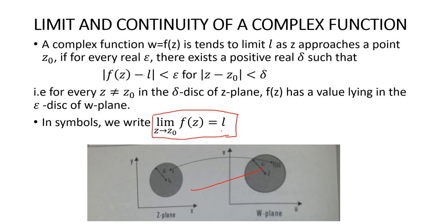In the real number system, the limit as x tends to x0 of f(x) equals l, and x approaches x0 either from the right or from the left — the left-hand limit and right-hand limit. If both limits exist and are equal, then the limit of the function exists. But in the complex case, z is in a two-dimensional plane, so z approaches z0 in different ways — along a straight line or a curved path.